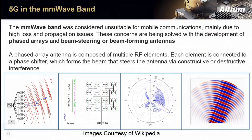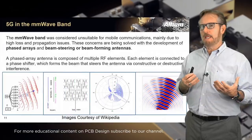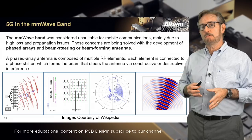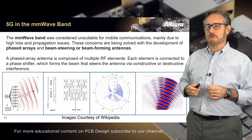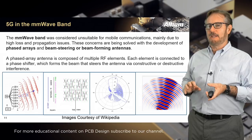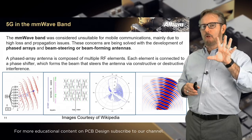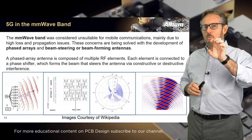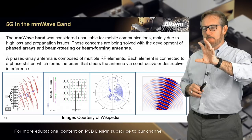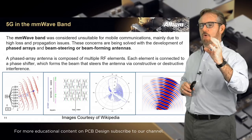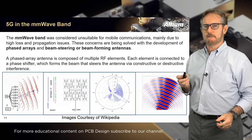These slides from Wikipedia show how a millimeter wave band would operate. For the longest time, millimeter waves were considered unsuitable for mobile communications due to high loss and propagation issues. Some of these concerns are being solved with the development of phased array, beam steering, or beam forming antennas. I encourage you to look up animated GIF images of these — on the far right, you see multipoint antennas broadcasting in a moving pattern that works around obstacles.